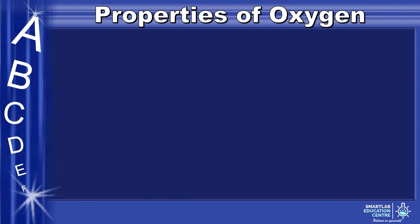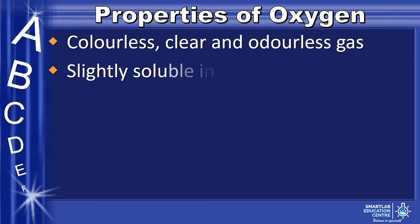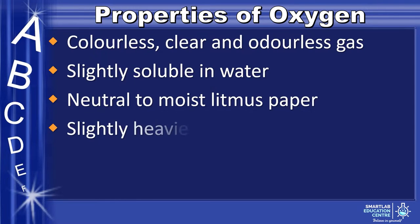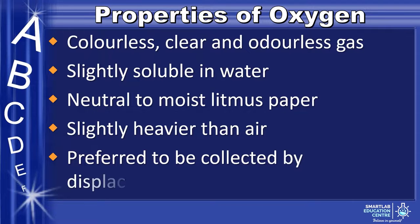The properties of oxygen are that it is a colorless, clear, and odorless gas. It is slightly soluble in water, it is neutral to moist litmus paper, it is slightly heavier than air, and lastly is preferred to be collected by displacement of water.